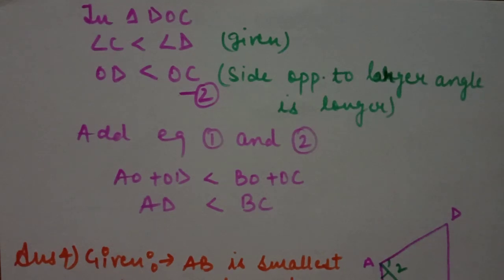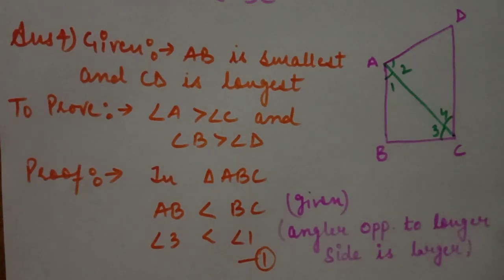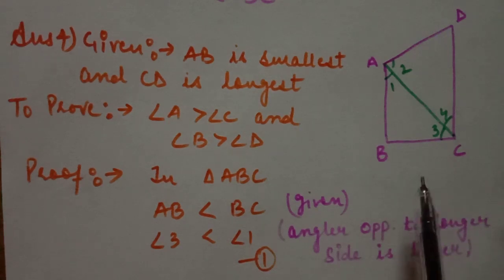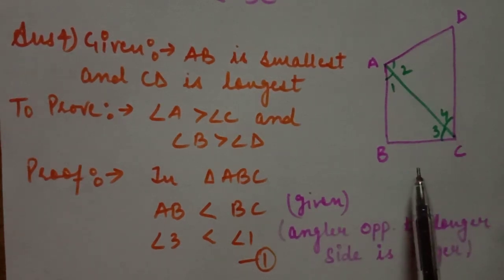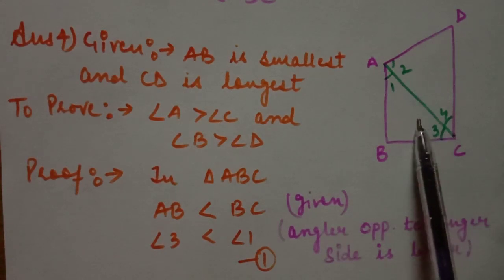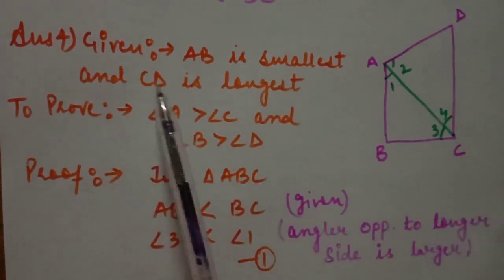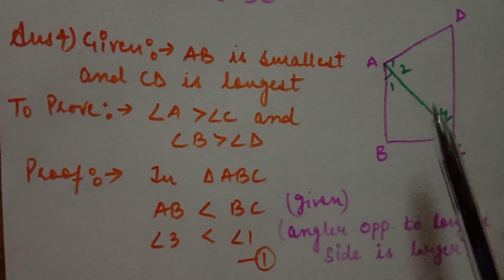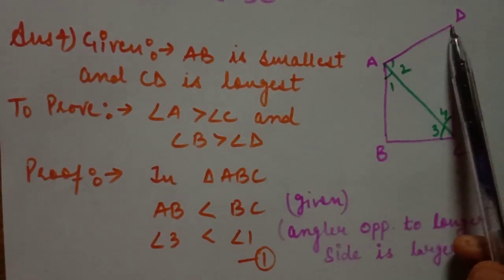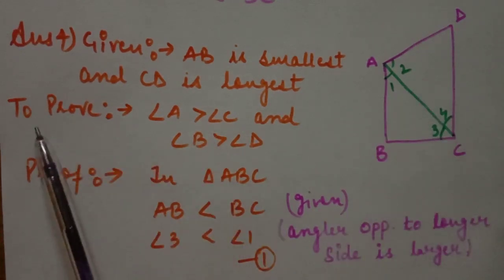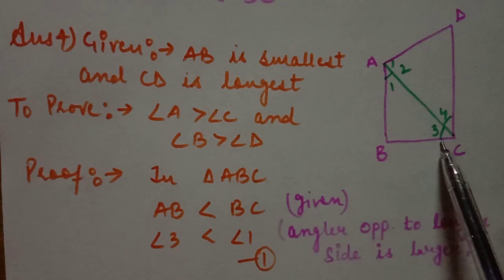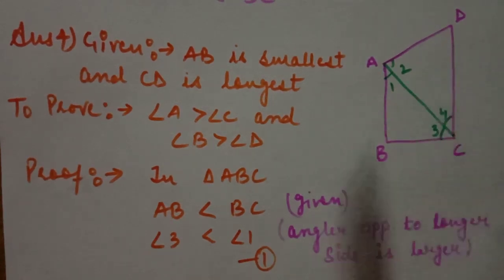Next is Question 4, a very important question. Question 4 from NCERT: AB and CD are respectively the smallest and the longest sides of quadrilateral ABCD. Show that angle A is greater than angle C and angle B is greater than angle D. Given: AB is the smallest side and CD is the longest side. We have to prove angle A is greater than angle C and angle B is greater than angle D.